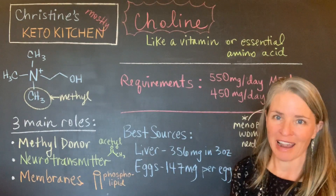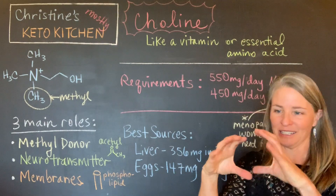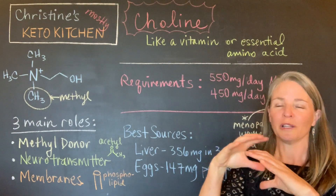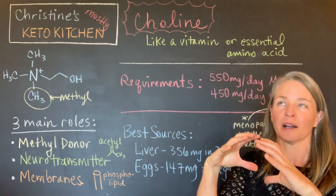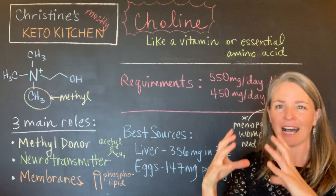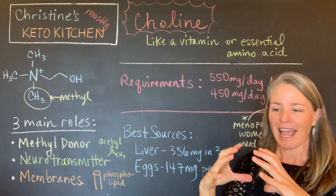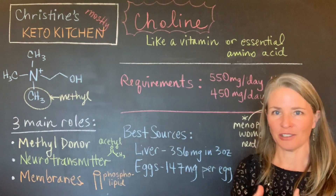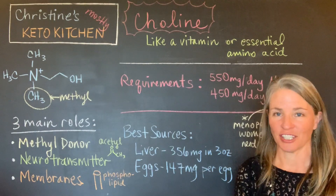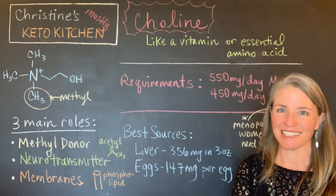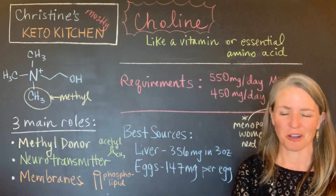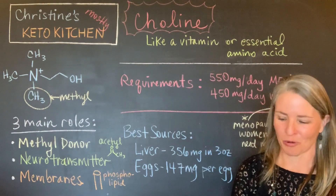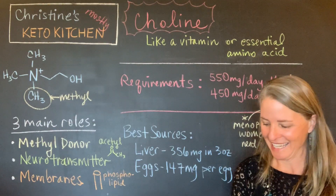Membranes are everywhere — every cell has a membrane around it. Phosphatidylcholine tends to be on the outside, and that helps with fluidity between the cells and the way that they function. That also goes for the organelles that are inside of the cells. I just cannot emphasize how important choline is.